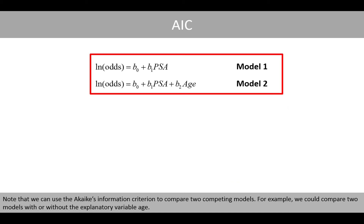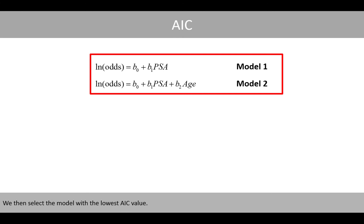Note that we can also use the Akaike information criterion to compare two competing models that are not nested. For example, we could compare two models with or without the explanatory variable age, and select the model with the lowest AIC value.